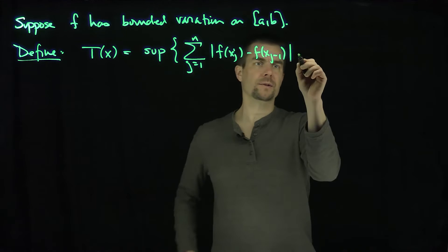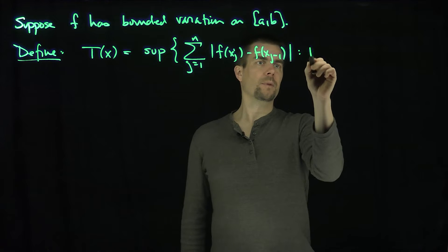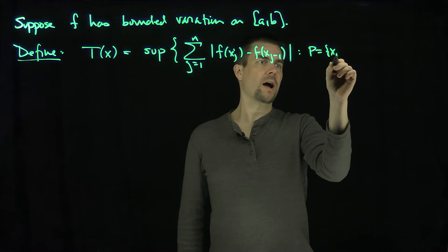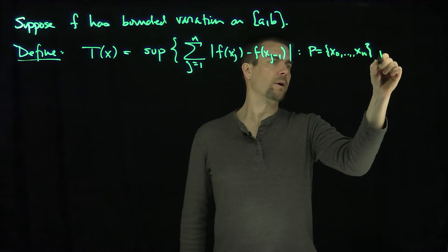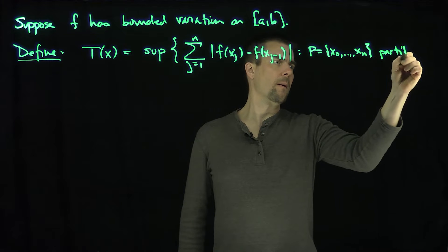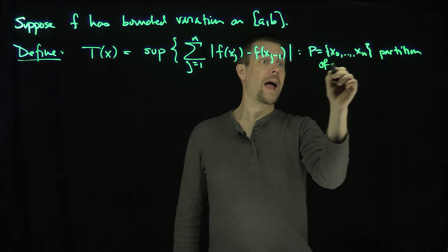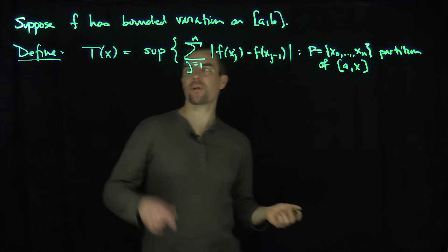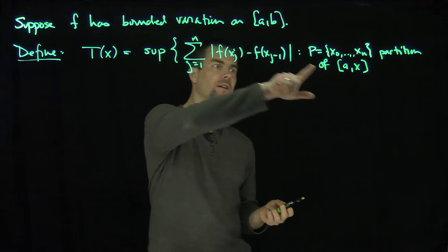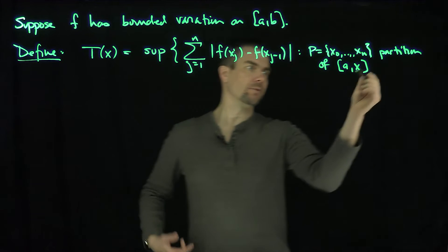except now I'm going to let P, which is x0 through xn, be a partition of A up to the point x. So by plugging in different values of x on this interval I'm going to get a different total variation.